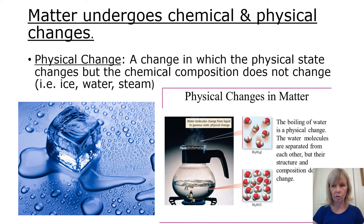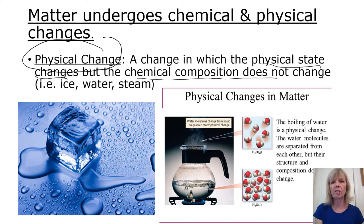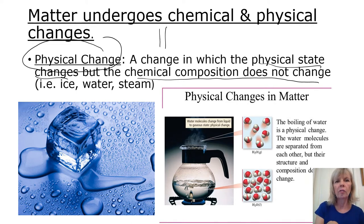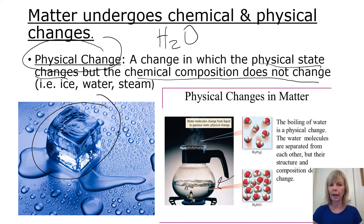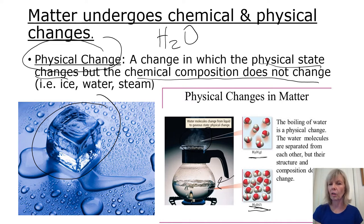Matter can undergo chemical and physical changes. A physical change is when the physical state changes but the chemical composition does not. When we talk about physical state, we mean whether it's a solid, liquid, or gas; chemical composition refers to the atoms that make up the compound. For example, water's formula is H2O. If I put a bottle of water in the freezer, I create ice — my physical state changed from liquid to solid, but the chemical composition did not change. I still have H2O. Similarly, heating water creates steam — the difference between liquid water and steam is just the space between those molecules.